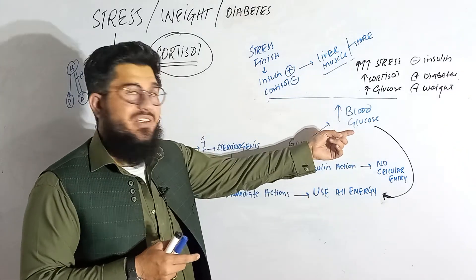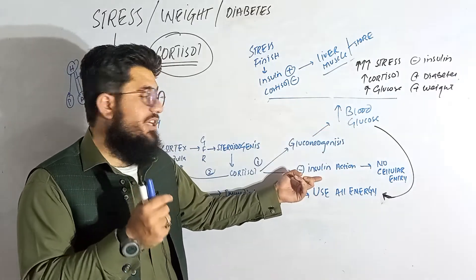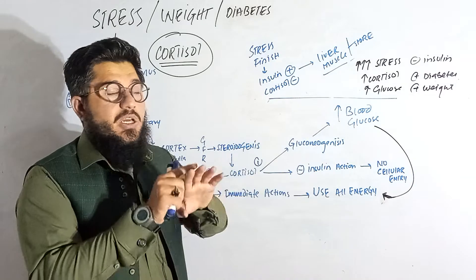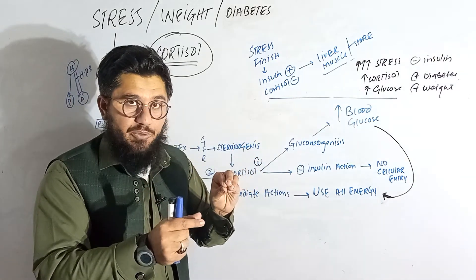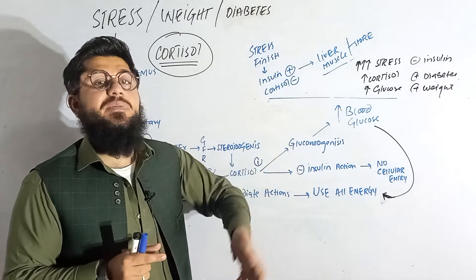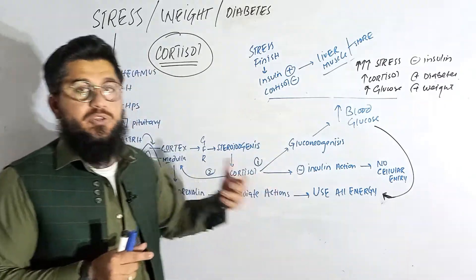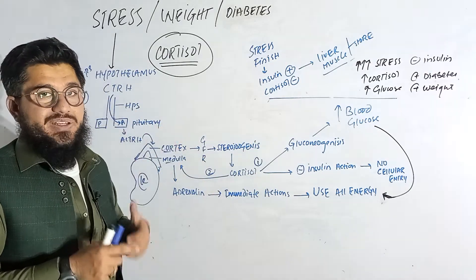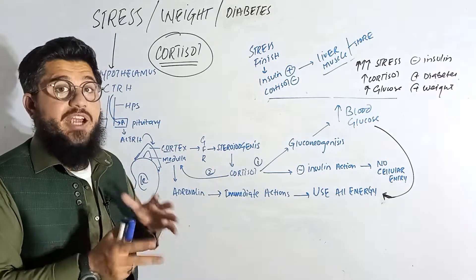In the meanwhile, cortisol is also helping us by providing gluconeogenesis — meaning it is increasing the blood glucose level. It also inhibits insulin from decreasing blood glucose, so the glucose level remains high and can be used to compensate for and manage the stress.